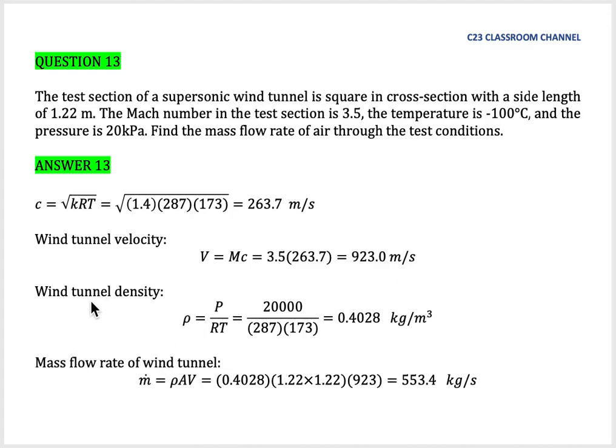The wind tunnel density can be calculated using rho equals P over RT. The pressure here is given in the question as 20 kPa, and R is the gas constant.